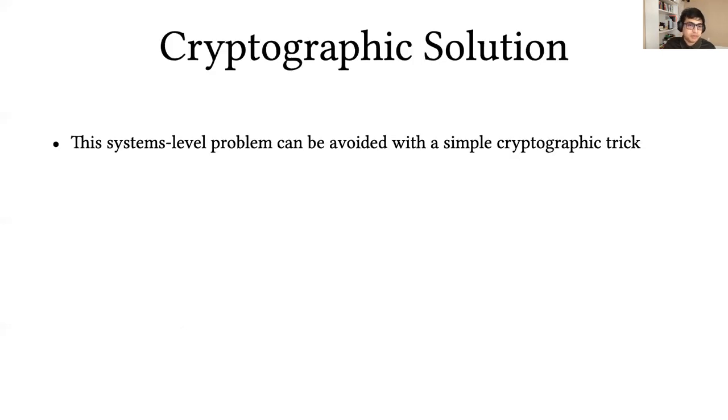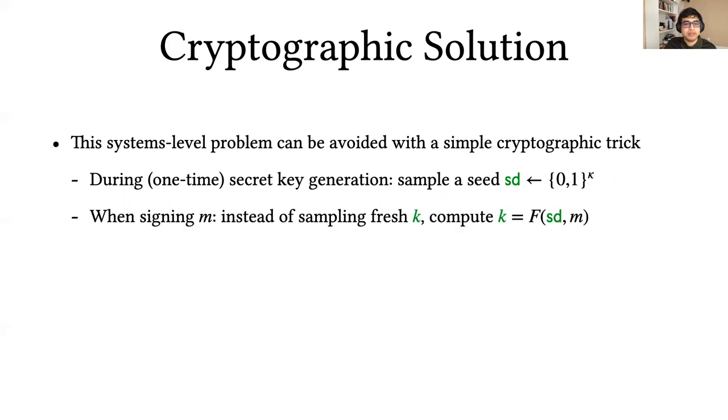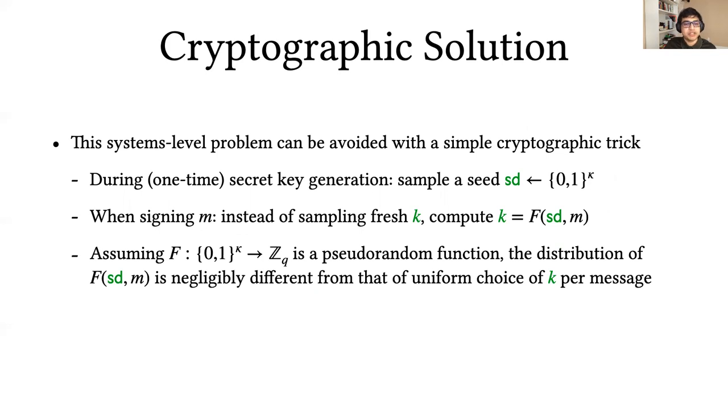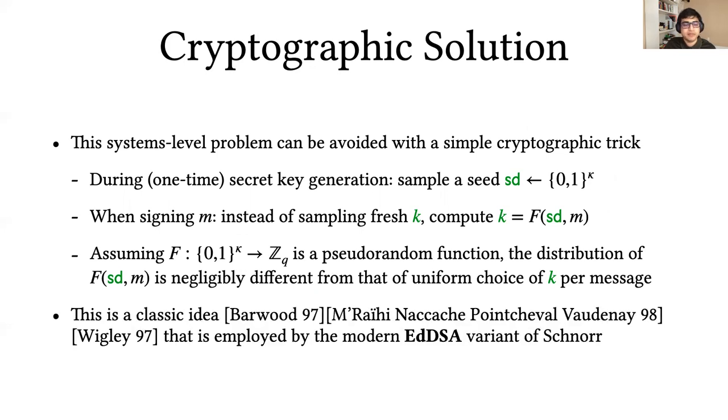This is a systems level problem that we can largely avoid with a simple cryptographic trick. During one-time secret key generation, we can sample a seed, and then when signing a message, instead of sampling a fresh K, we can compute K as a deterministic function of the seed and the message being signed. Assuming that this function is a pseudorandom function, the security of the resulting scheme is as good as choosing K uniformly for each message. This is a classic idea more recently employed by the modern EdDSA variant.